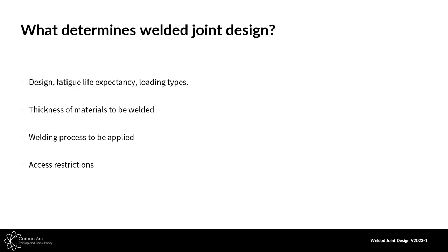There are four main areas — there are more but we'll concentrate on these four first. We've got design based on fatigue life expectancy and the different loading types which we'll apply to the weld, which we'll review in fatigue modules later on. We also have the thickness of the material to be welded, the welding process to be applied, and any access restrictions. By understanding those at the design phase we should be able to pick the best welded joint design for our process.